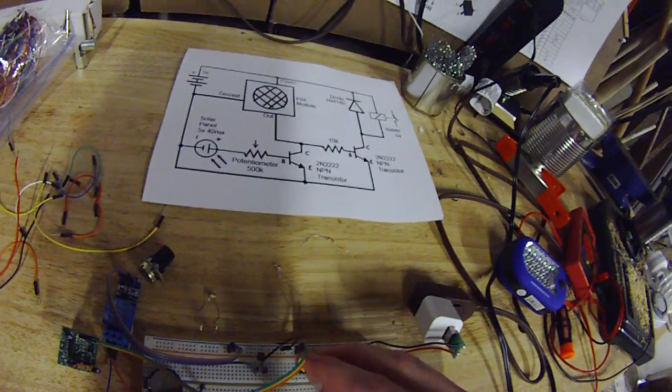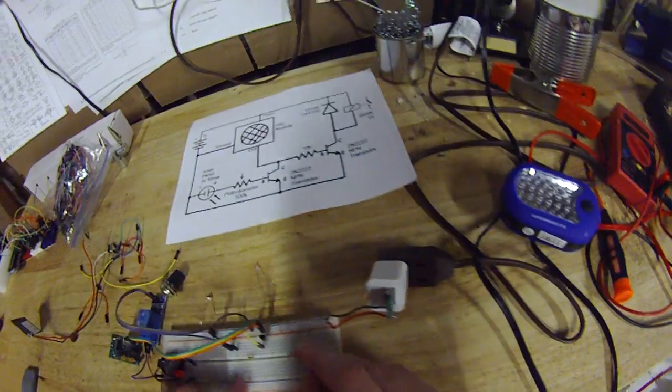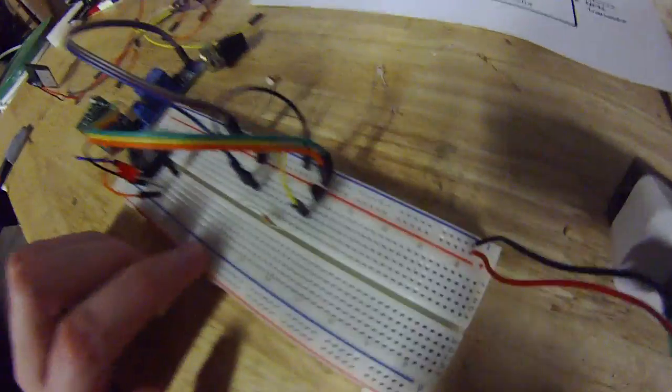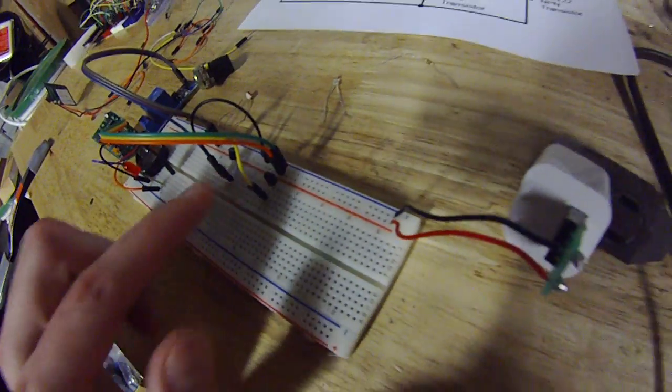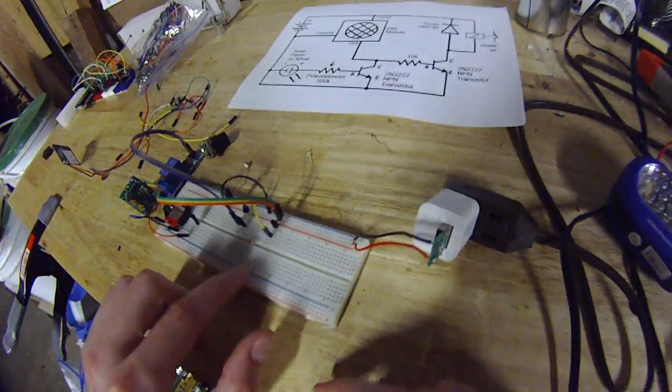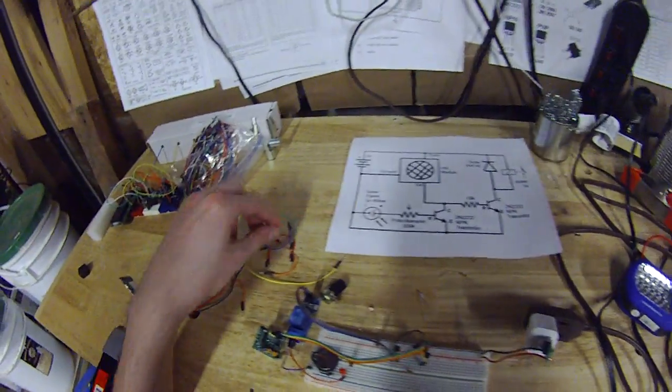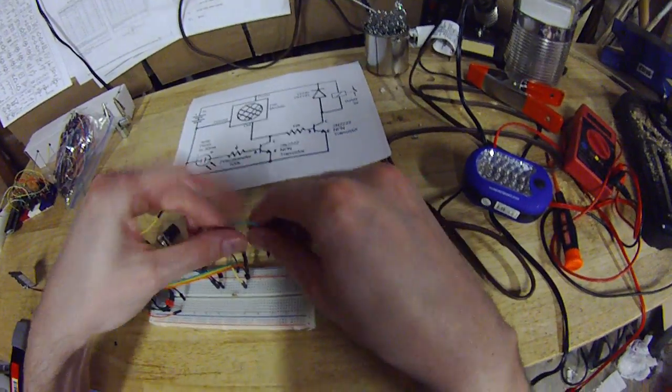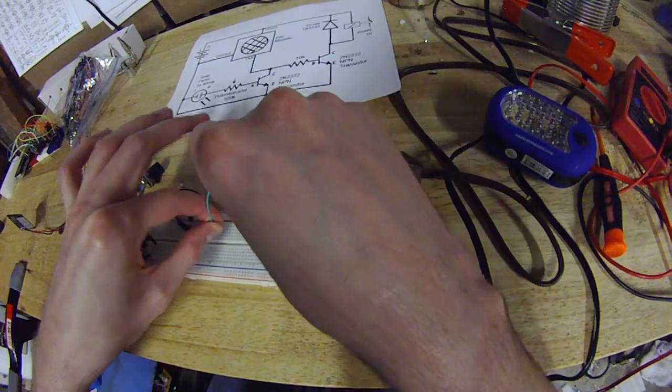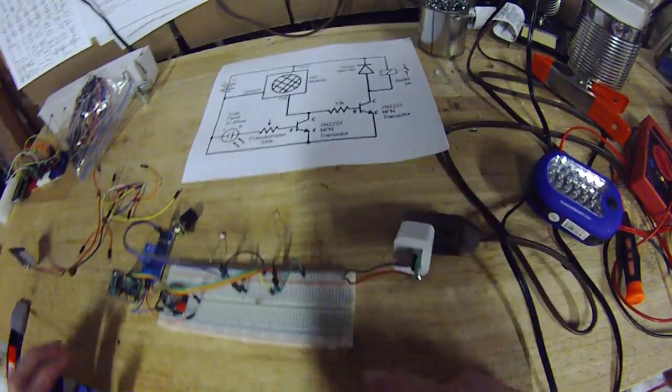So that one is going to go on the collector leg just attached to the signal. And then the ground leg, or the emitter leg, rather, goes to ground. Green. There we go. It's connected.